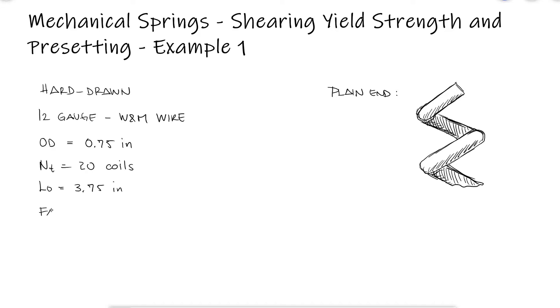What are the factors of safety for yield at closure with and without presetting? This is the first example for the shearing yield strength and presetting main video. Link in the description below.